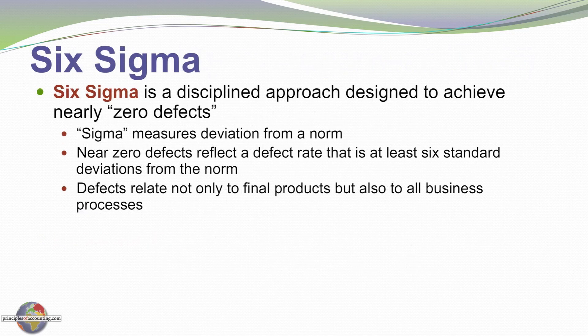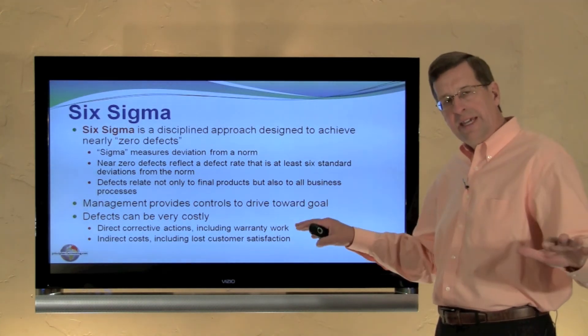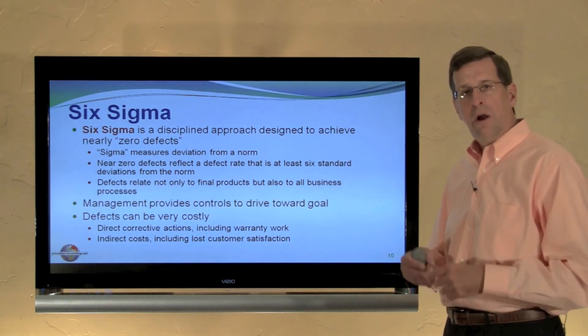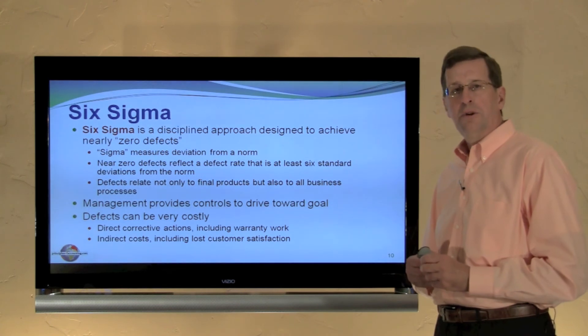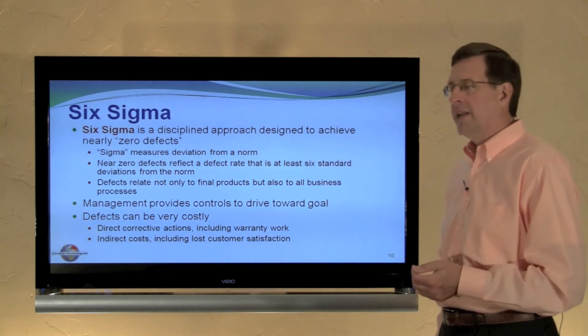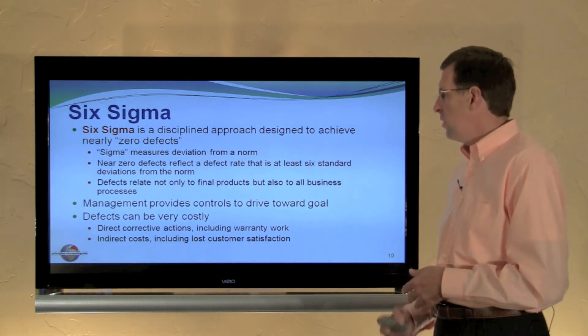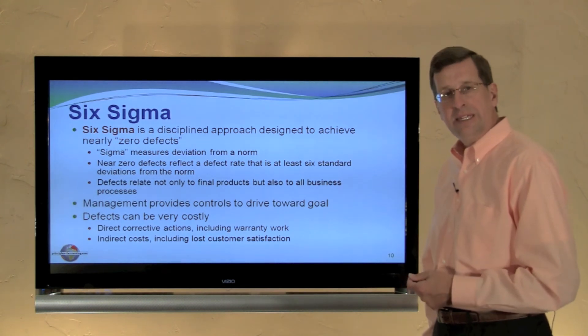Six Sigma is a disciplined approach designed to achieve nearly zero defects. Sigma is a term that measures deviation from a norm in a statistical context. Near-zero defects would reflect a rate that shows six standard deviations from the norm. Defects relate not only to final products but also to business processes. As you drive toward a Six Sigma output, you're saying you want your error rate so far out in the tail that it's virtually near zero — just two, three, or six errors per million units produced. A Six Sigma environment strives for virtual perfection in all that is done. Defects can be very costly, leading to corrective actions such as rework, warranty work, and customer unhappiness.